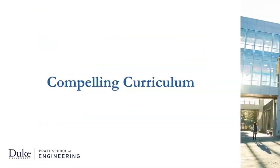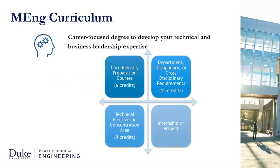Let's explore the curricula of our Master's programs. The Duke Master of Engineering, or M.Eng, in Biomedical Engineering is a career-focused degree that will deepen your understanding of technology and help you develop the business leadership and management expertise you need to succeed in your career. In the Master of Engineering program, you take a core of two business leadership and management courses, five courses to meet department, disciplinary, or cross-disciplinary requirements, three specialized technical courses in a concentration area, and a required internship or project to complete the degree. Most students complete internships, and relationships with internationally respected biotech firms in nearby Research Triangle Park may provide unique opportunities for internships.